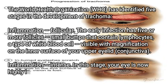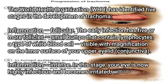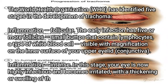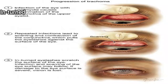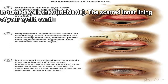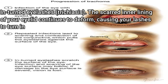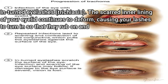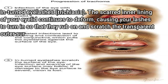Stage two — inflammation intense: the eye is now highly infectious and becomes irritated, with a thickening or swelling of the upper eyelid. Stage three — eyelid scarring: repeated infections lead to scarring of the inner eyelid. The scars often appear as white lines when examined with magnification, and the eyelid may become distorted and turn in (entropion).